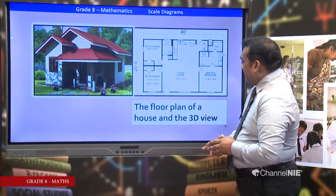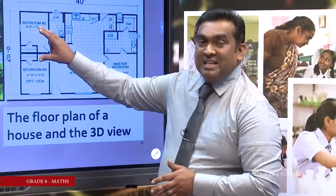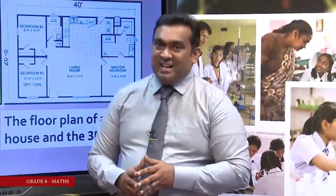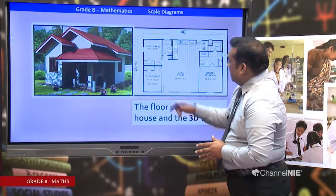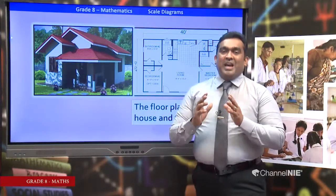Next, the floor plan of a house and its 3D view. In this diagram you can see a bedroom. You can measure the length and breadth of the bedroom using centimeters, but these are not the actual measurements — using meters you would measure the length and breadth of a real room. So the actual length is decreased by this diagram. This is also an example of a scale diagram. All locations — living room, master bedroom, bedroom number 3 — have been decreased according to actual measurements.